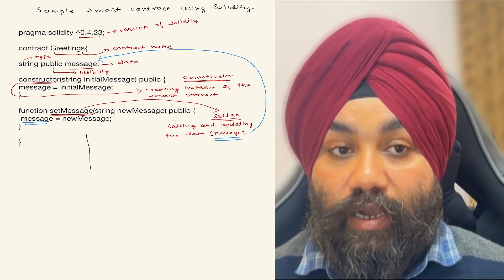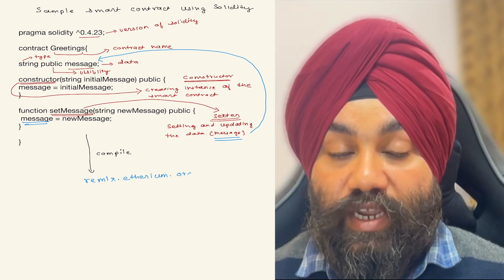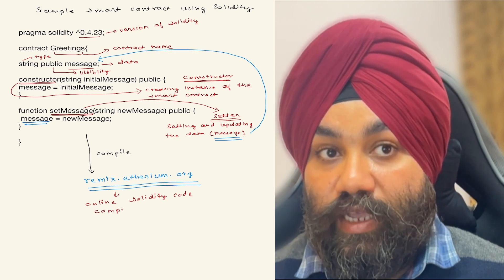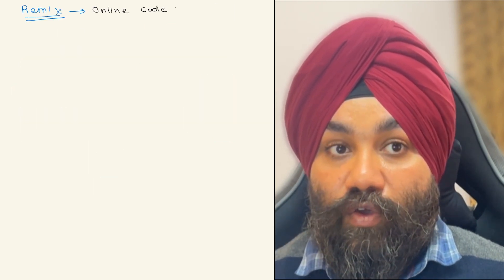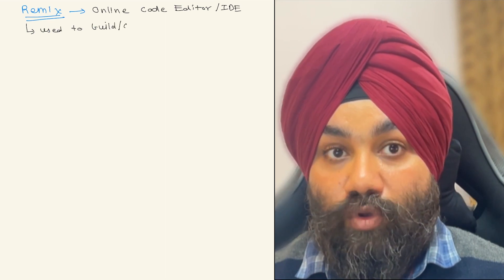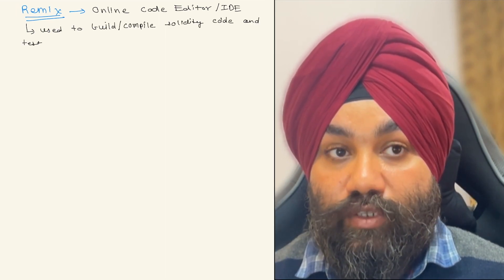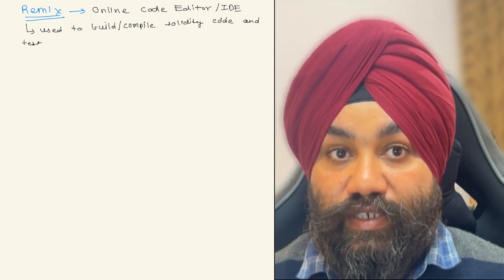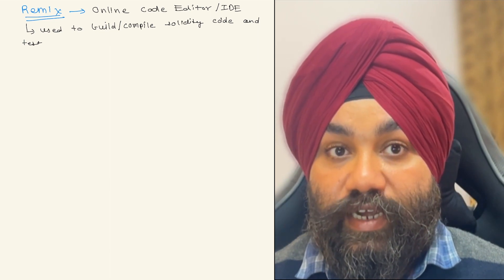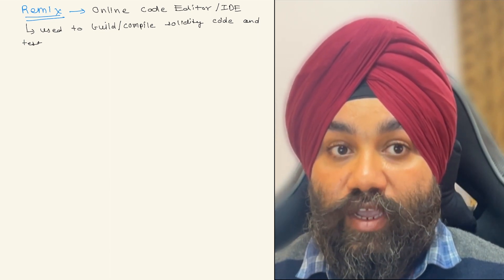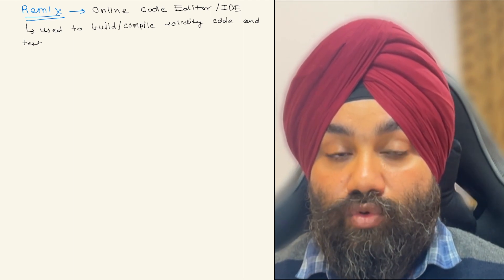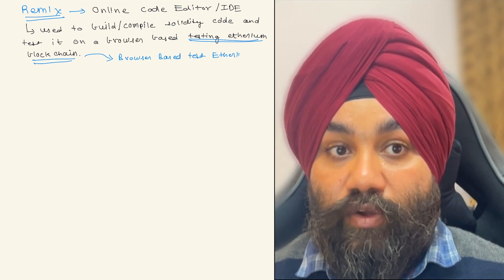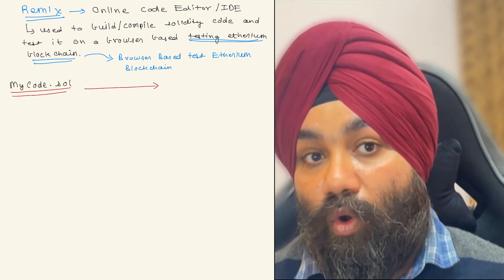For compiling this smart contract we'll go to remix.ethereum.org, which is an online Solidity code editor and IDE used to build and compile Solidity code. It is also used to test the code by deploying it on a browser-based Ethereum blockchain network — it creates a testing Ethereum blockchain running in your browser that you can use to deploy and test your code.